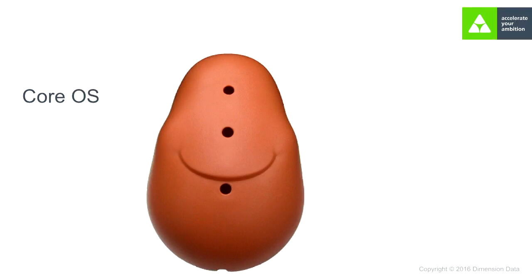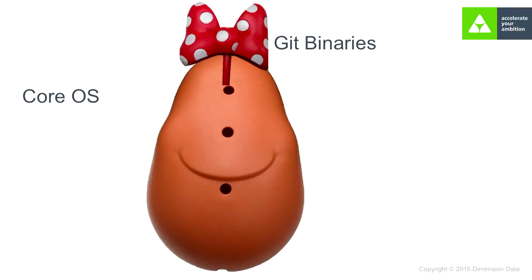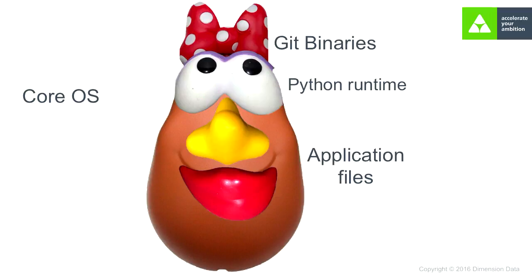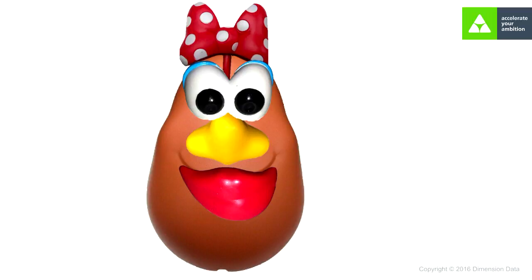First things first, let's talk about storage. The union file system that Docker uses is a way of having layers. You'd normally start off with a base layer — in my analogy I'll use Mr. Potato Head to represent Docker layers. You start with a base image, which is normally a really cut-down Linux image, then add on top git binaries, application files, and a Python runtime. The key thing about the layering system is that if you want to swap out a specific piece, you don't have to replace the whole potato. If you want to swap the 3.6 Python runtime for 3.7 alpha, you can just swap out the eyes instead of changing the entire potato, making patching much easier.